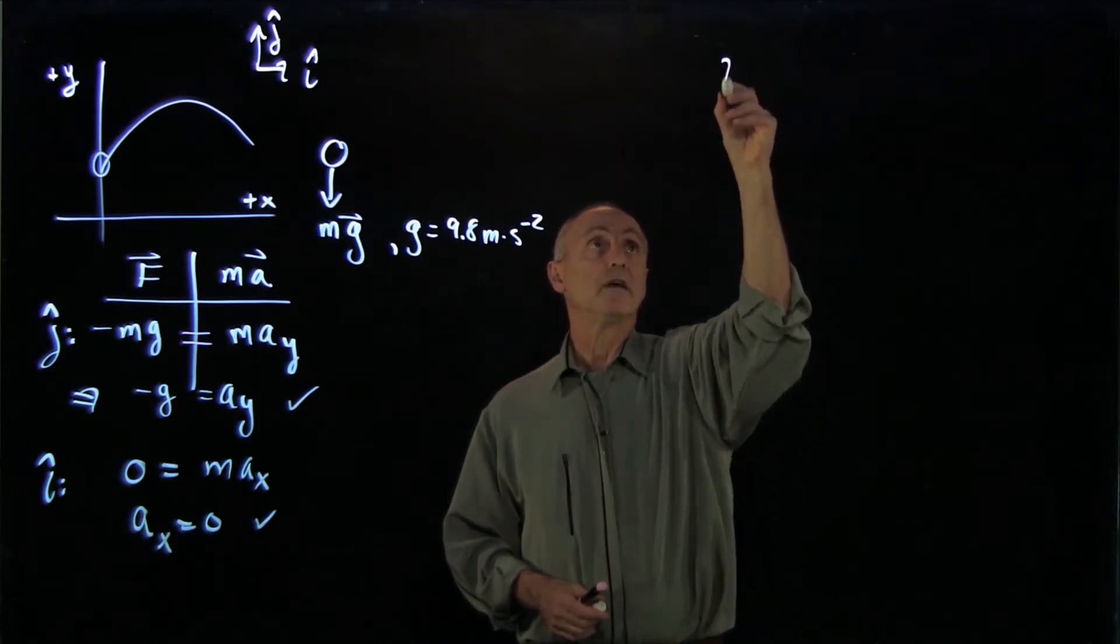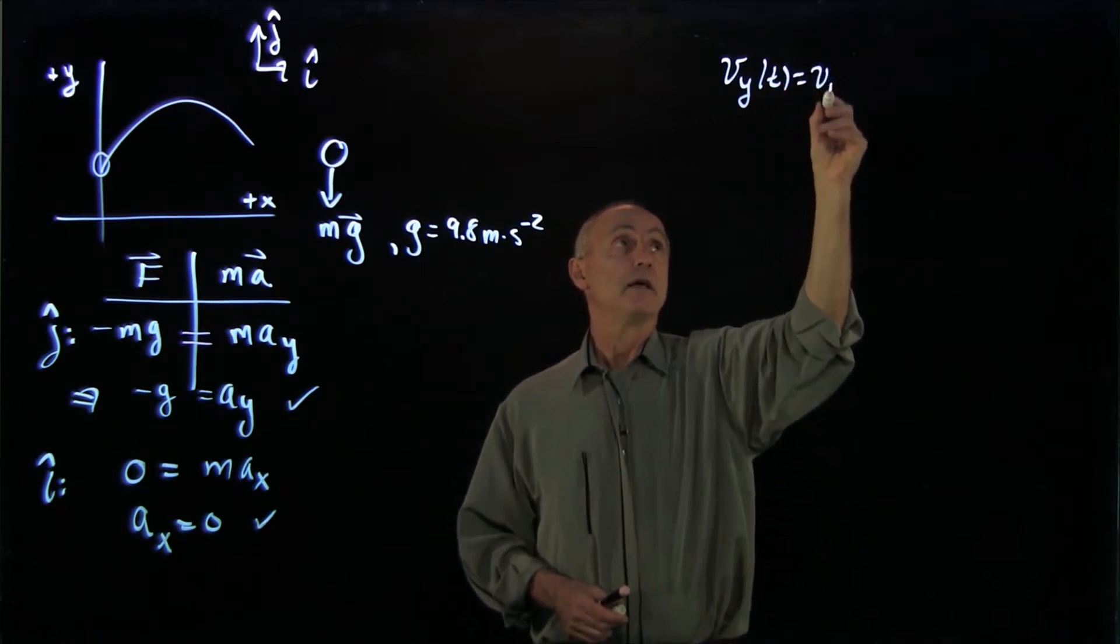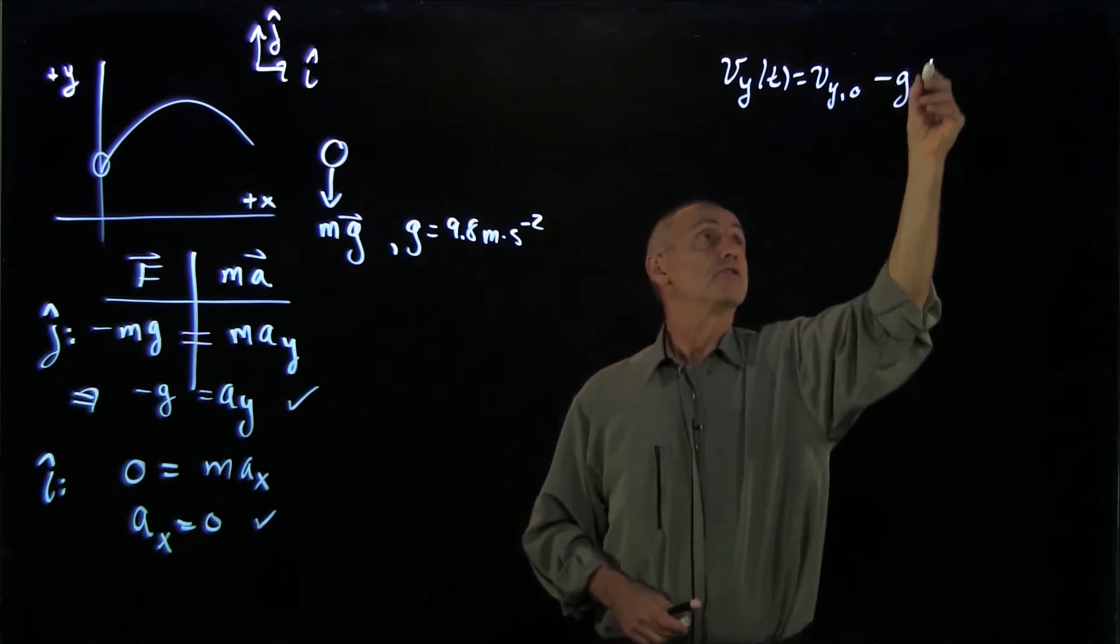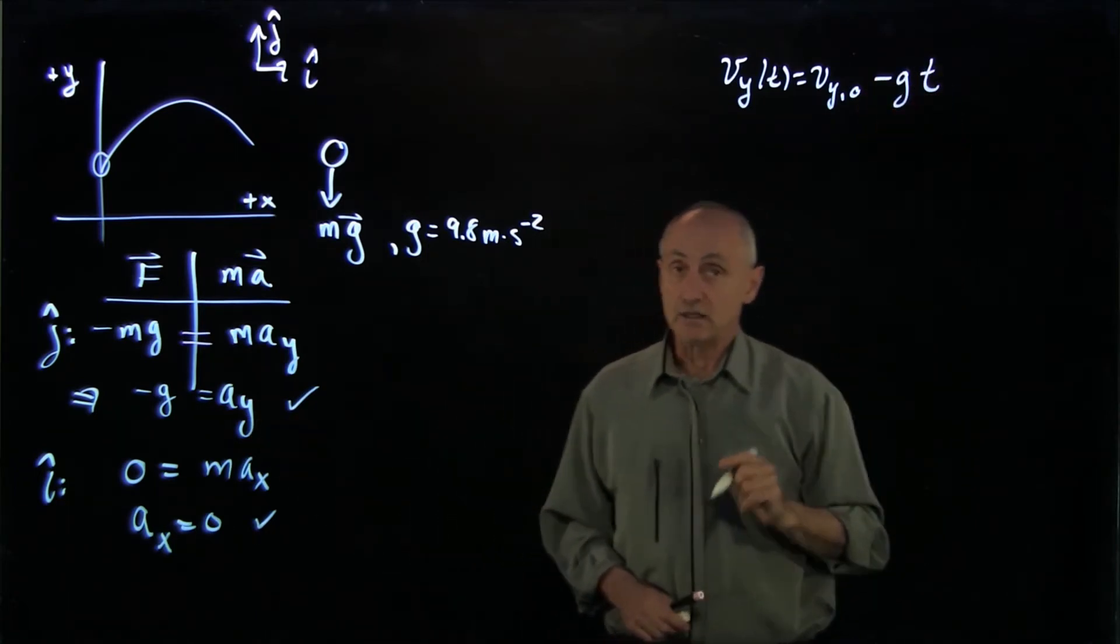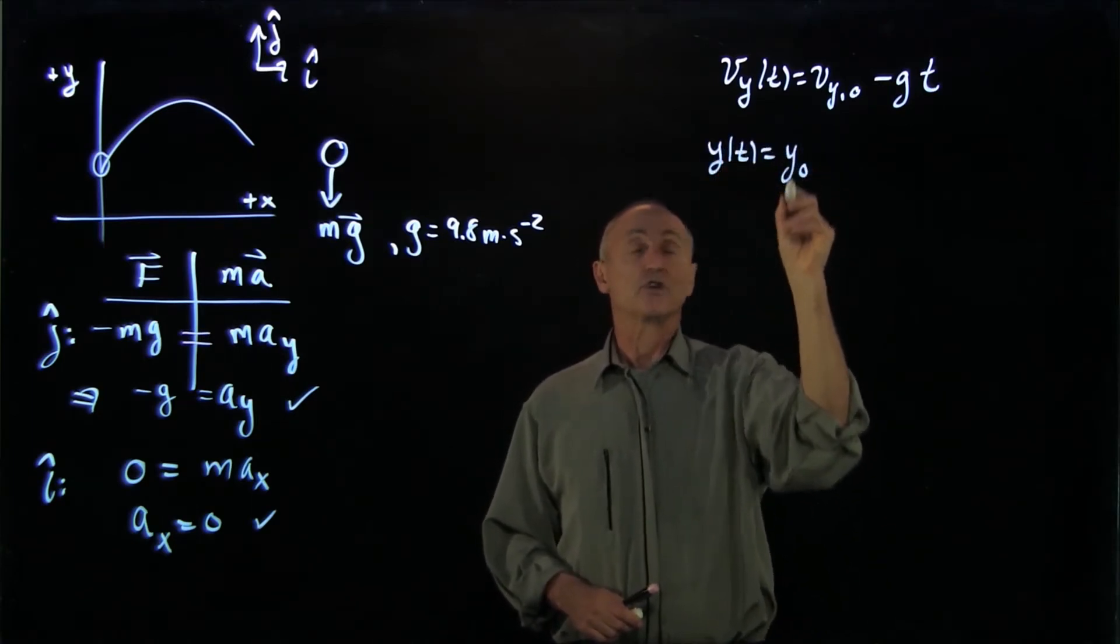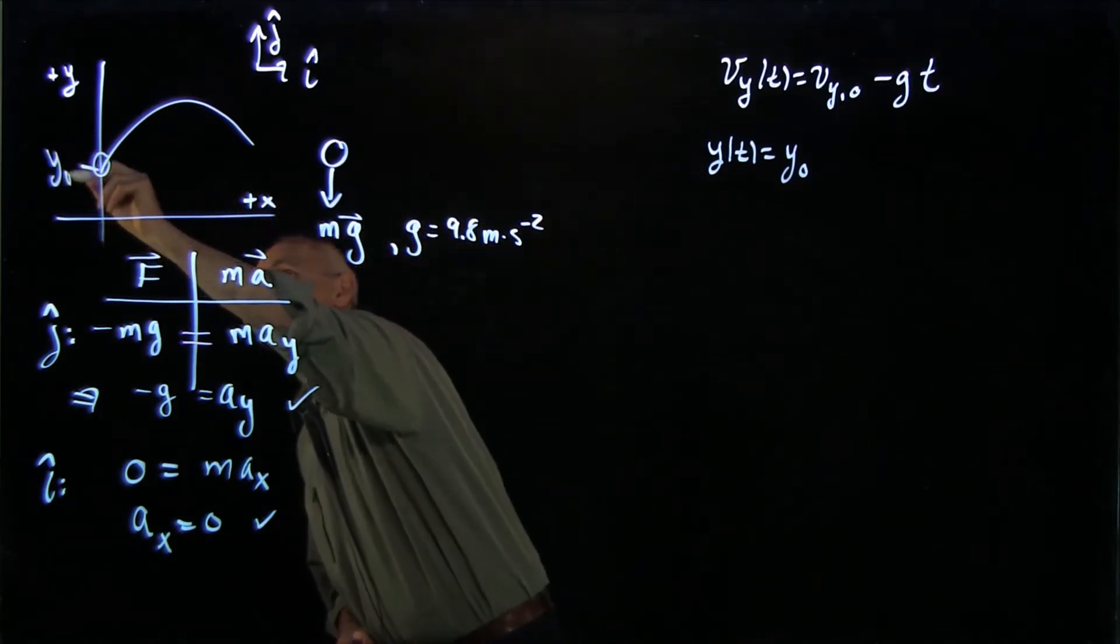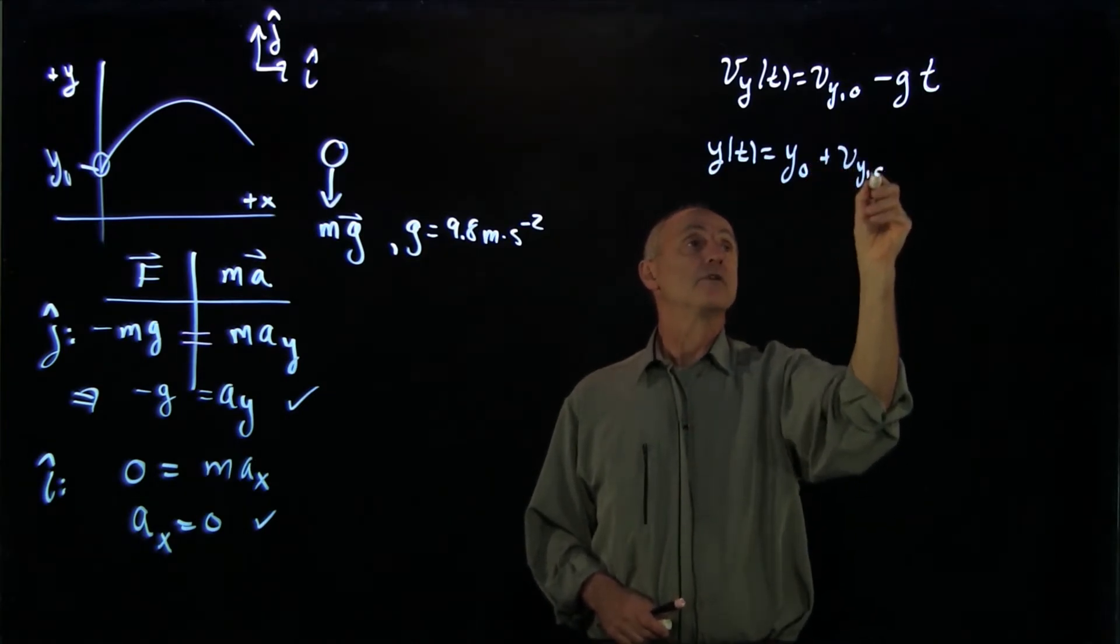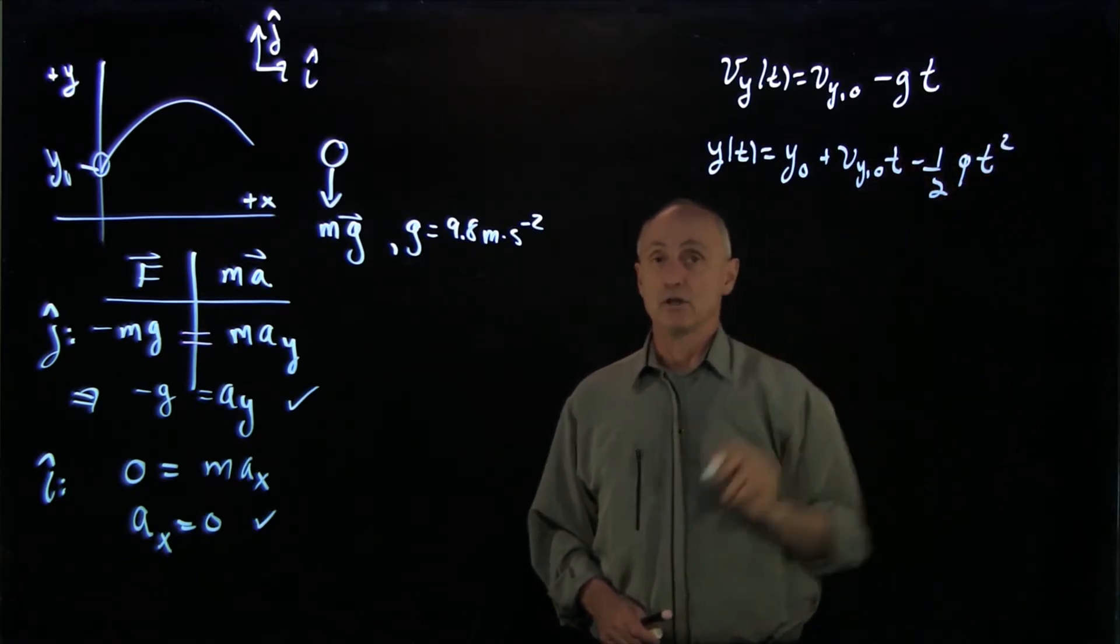First, we'll write the velocity. vy as a function of time is equal to some initial value vy0, and because the acceleration is negative, minus gt. You can test your integration technique to see that. And the position as a function of time is just some constant value, y0, plus vy0 t minus one-half gt squared.